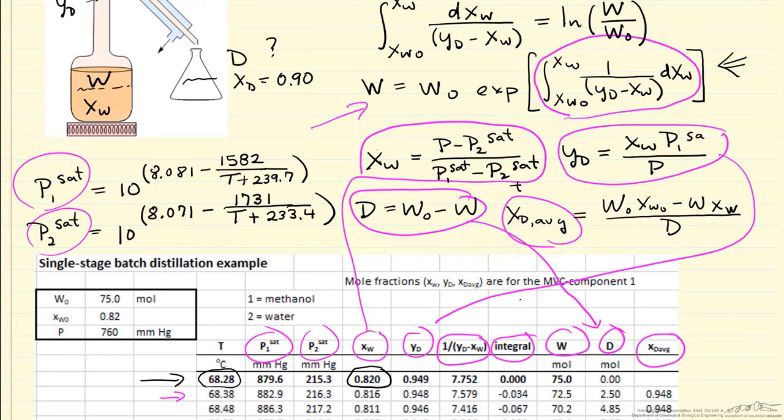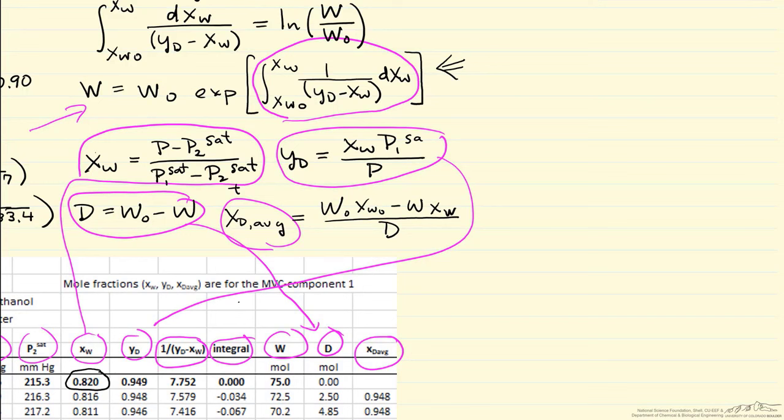Let's talk more about this integral. If we look at a plot, our variable is x_w, the mole fraction in the still, and we're integrating one over (y_d minus x_w).